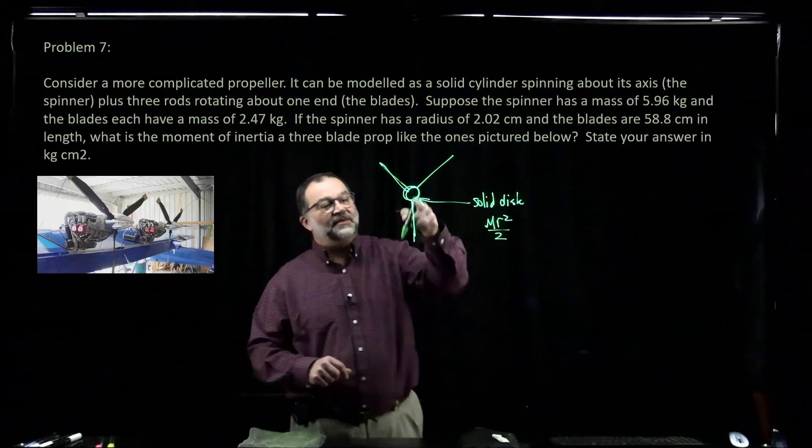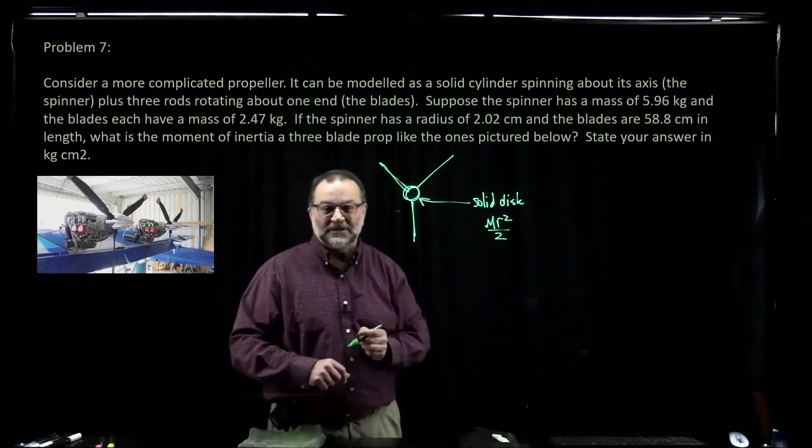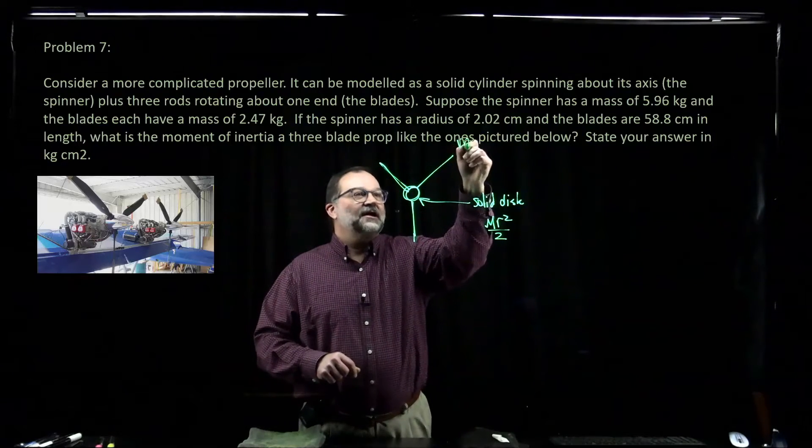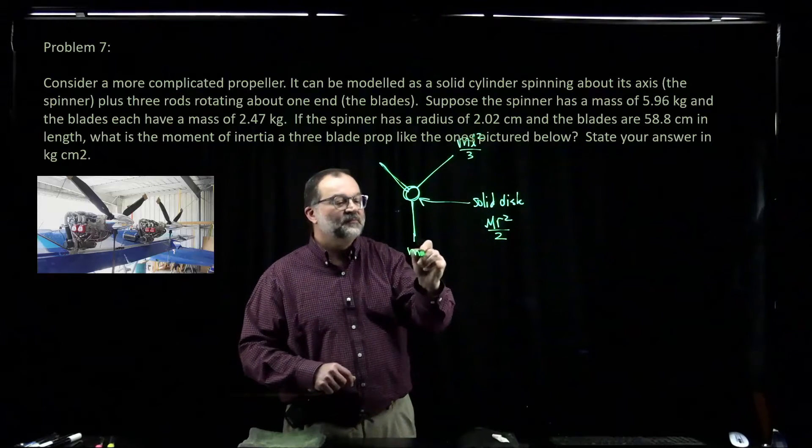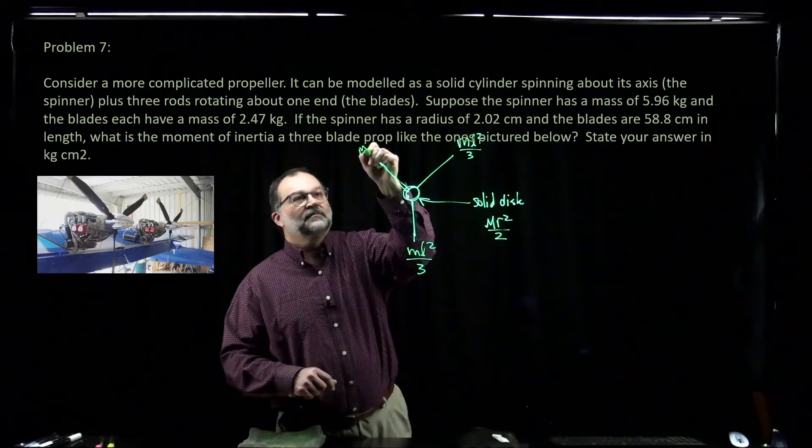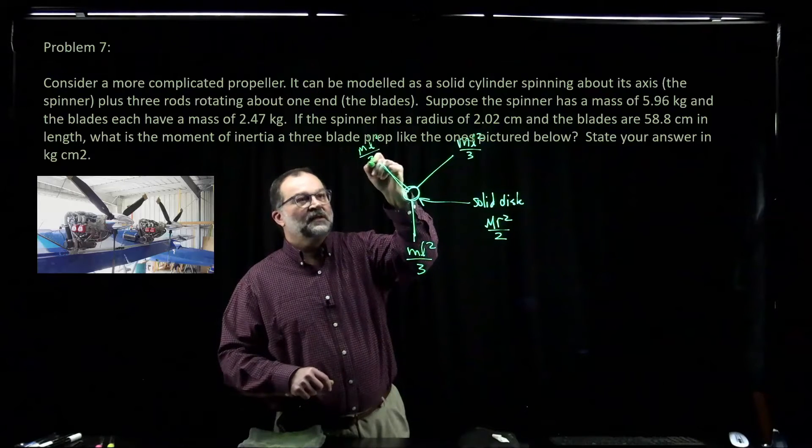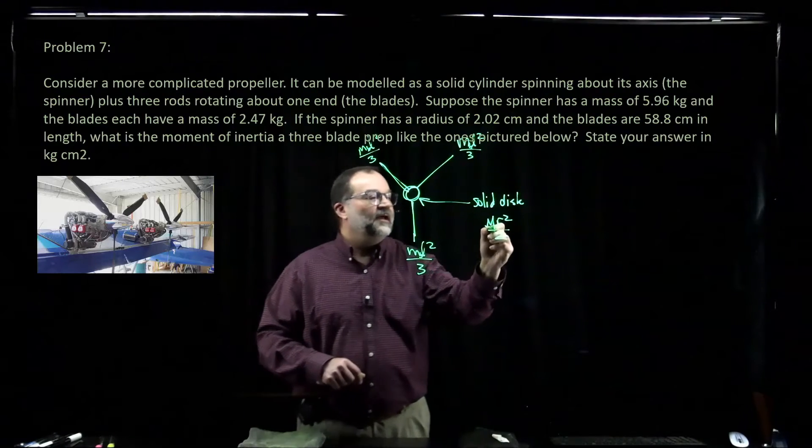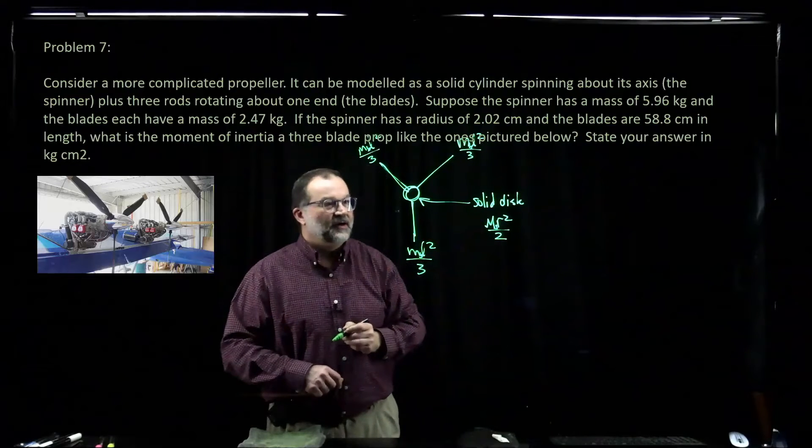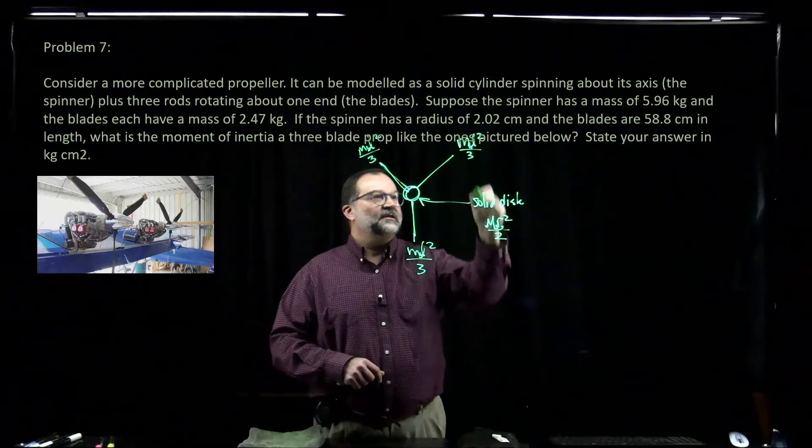And then these can be modeled as three different rods. They're going to have m l squared over 3, and I'll put b for the blade and s for the spinner, radius of the spinner, length of the blades.